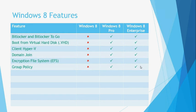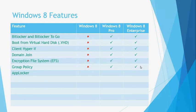The next feature to discuss is AppLocker, which was first introduced in Windows 7 and Windows Server 2008 R2. AppLocker allows you to specify which users or computers can run particular applications in your organisation. With AppLocker, you are able to create rules which either allow or deny specific applications from running for certain users. The AppLocker feature is only available in the Windows 8 Enterprise Edition.